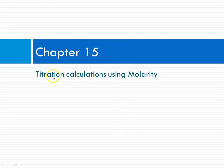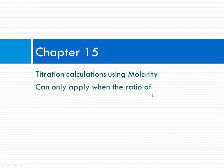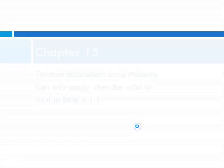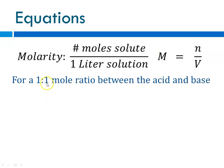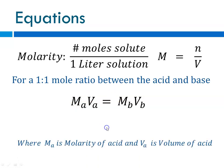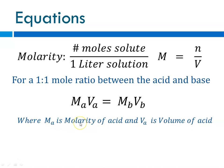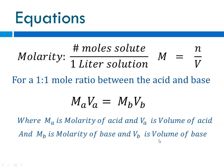We're going to start with the simpler version: titration calculations using molarity of the acid and molarity of the base. This only applies when the ratio of acid to base is a one-to-one mole ratio. Molarity is number of moles of solute per one liter of solution, so M equals n over V. For a one-to-one mole ratio, MaVa equals MbVb, where Ma is molarity of the acid, Va is volume of the acid, Mb is molarity of the base, and Vb is volume of the base.